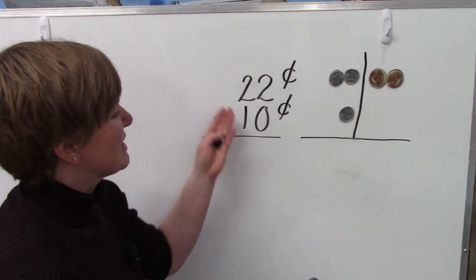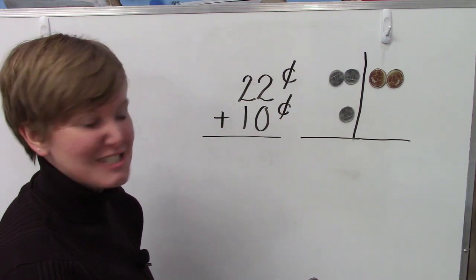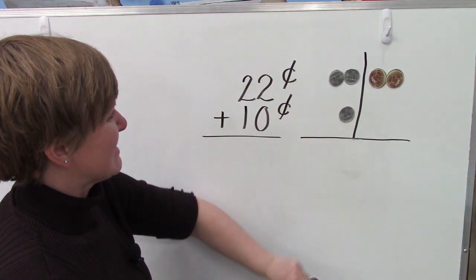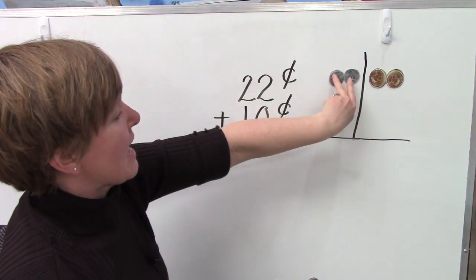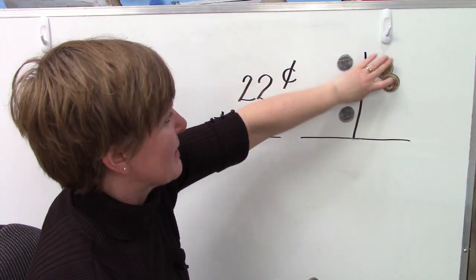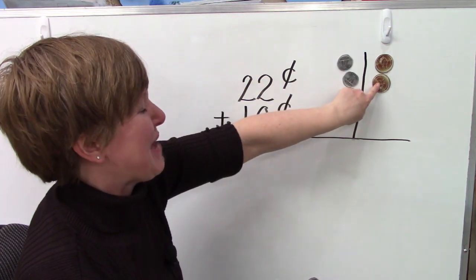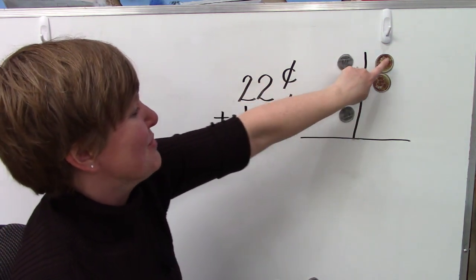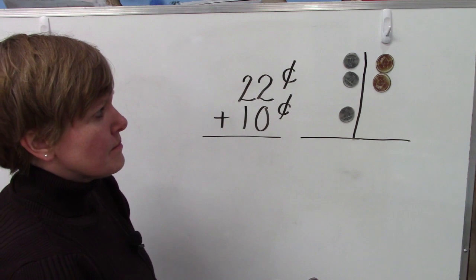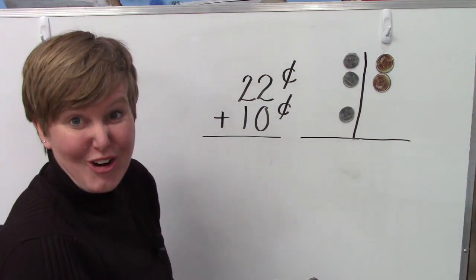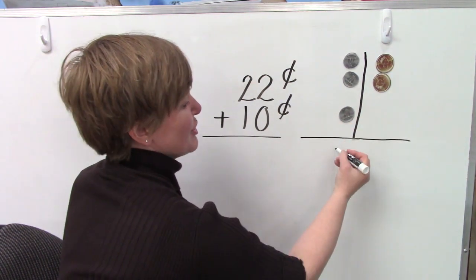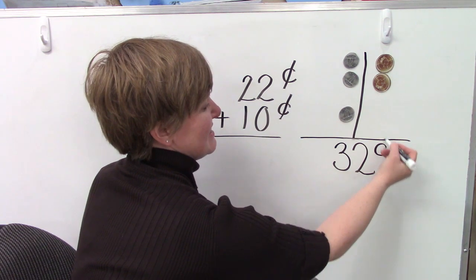In this question, we have 22 cents plus 10 cents. And I put 22 cents over here plus our 10 cents. So in our tens place, we have two dimes for 10, 20. And in our ones place, we have two pennies. 10, 20, 21, 22. 22 cents plus 10 more cents. Well, if we were adding these up with our coins, we would say 10, 20, 30, 31, 32. We would have 32 cents.